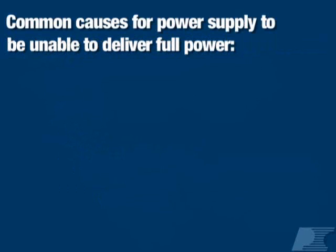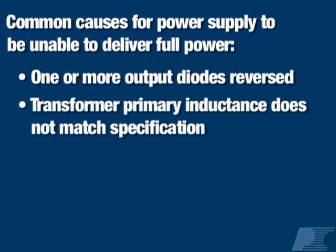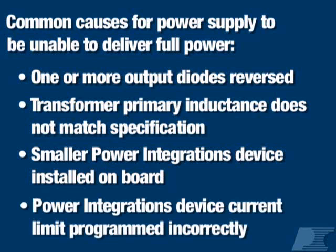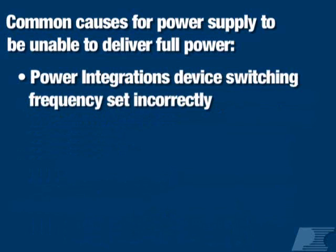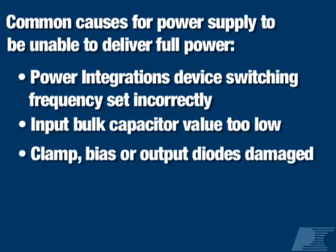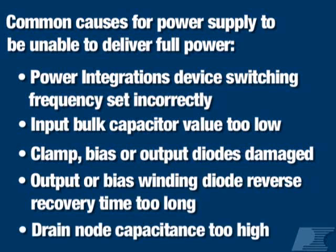Common causes for a power supply to be unable to deliver full power and thus enter auto-restart are: on a multiple output design, one or more output diodes are reversed; the transformer primary inductance doesn't match specification; a smaller Power Integrations device was installed on the board; the Power Integrations device current limit is programmed incorrectly; the switching frequency is set incorrectly; the input bulk capacitor value is too low; the clamp, bias, or output diodes are damaged; the output diode or bias-winding diode reverse recovery time is too long; or the drain node capacitance is too high.